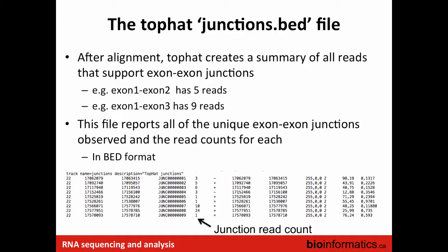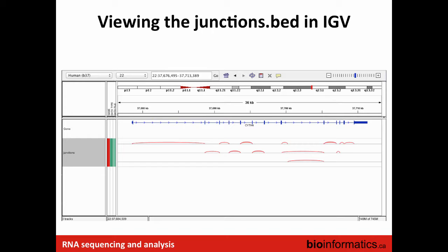The junctions BED file is a tab-delimited file where each line corresponds to a single exon-exon connection and the number of reads supporting that connection. In IGV, this looks like little arcs in red or pink — each arc corresponds to one or more reads spanning from the edge of one exon to the edge of another. The darker the arc, the more reads support that junction. This was done without prior knowledge of where the exon-exon connections are, but it matches the gene model very well.